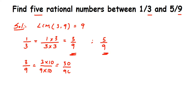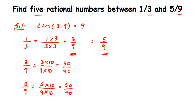For the second number 5 by 9, I'll take the same number 10 — if I took a different number, the denominators wouldn't match. So multiplying numerator and denominator by 10 gives 50 by 90. Now in place of 3 by 9 I have 30 by 90, and in place of 5 by 9 I have 50 by 90. Between 30 and 50 there are many numbers: 31, 32, and so on up to 49.